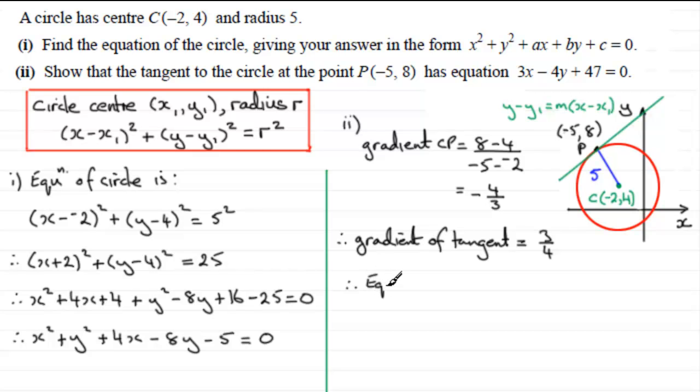We can then get the equation of the tangent. Therefore, equation of tangent is: it's going to be y - y₁, y₁ we're taking as 8, equals m, the gradient of the tangent, which we've just seen is 3/4, multiplied by x - x₁. And x₁ is the -5 there.